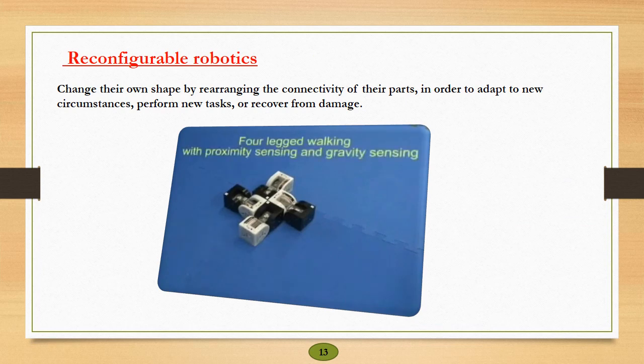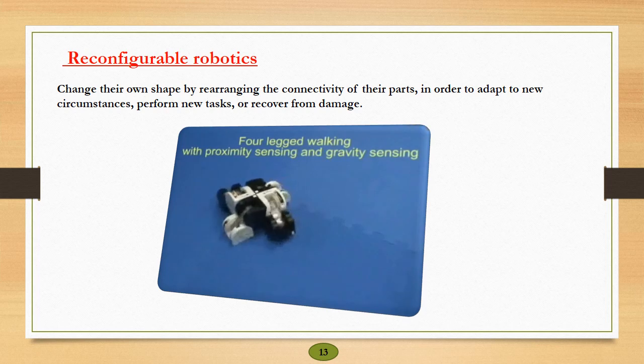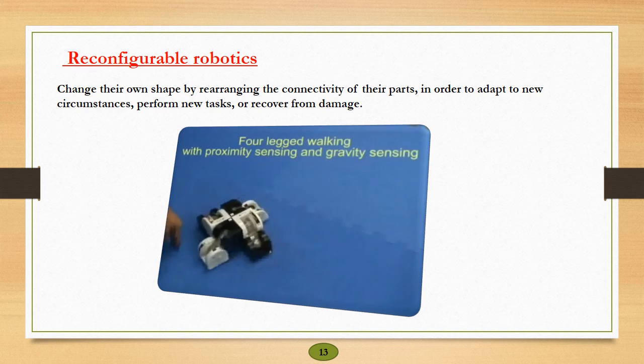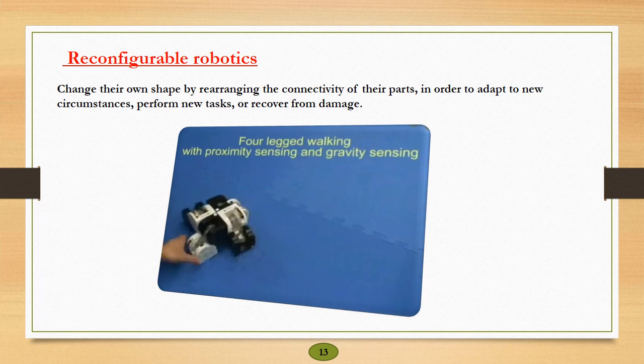Reconfigurable robots: reconfigurable robots are robots that can change their own shape by rearranging the connectivity of their parts in order to adapt to new circumstances or to perform a new task or even recover from damage.